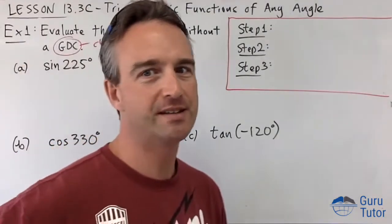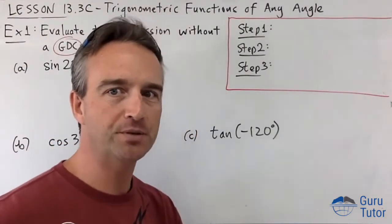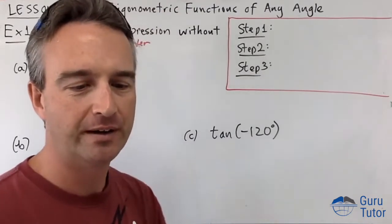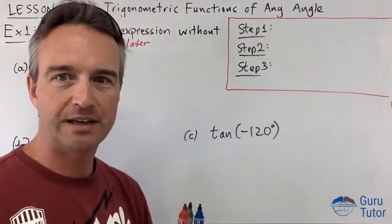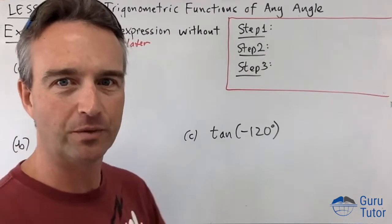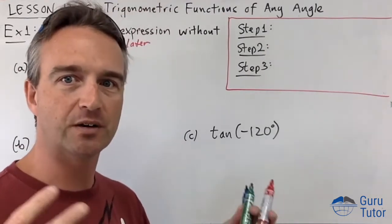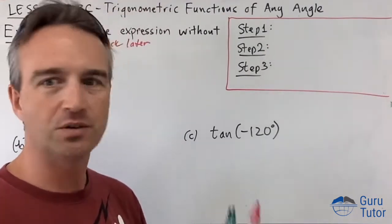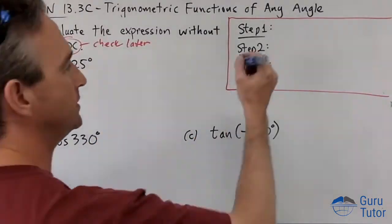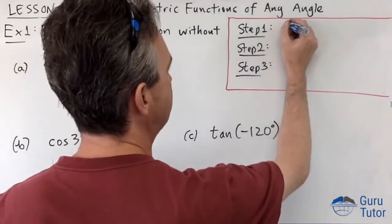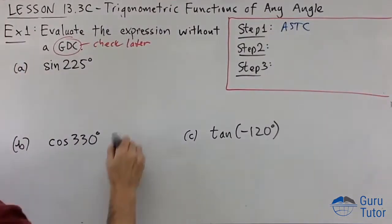sin(225°) — what is that? It's going to be something; it might be positive, it might be negative, we don't know. This encapsulates everything we've been doing with reference angles and standard position — it all comes together now. Step one: we do ASTC to figure out which quadrant this is going to be in.